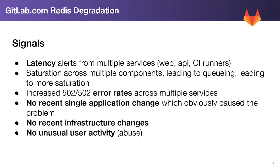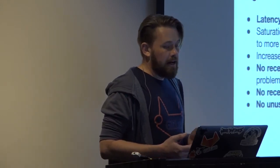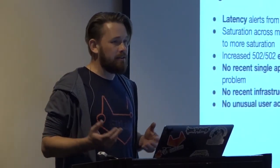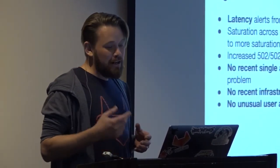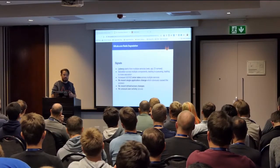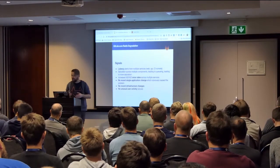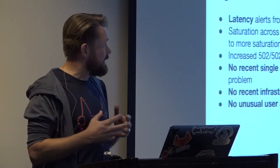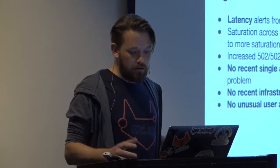The first thing we looked at was whether there was an application change — something just rolled into production causing the failure. That didn't seem to be the case. The next candidate was infrastructure changes — had we done anything to our infrastructure? Nothing. Then we checked the cloud provider, and we also looked at whether it was bad people: someone doing abuse, written a bot to push to GitLab 50 times a second deployed across the entire fleet. That didn't seem to be the case either. Something had changed and we were receiving error alerts and latency alerts across the whole system, but it wasn't the usual sort of problems.